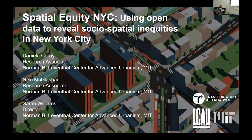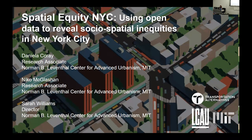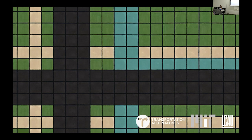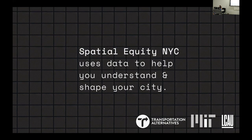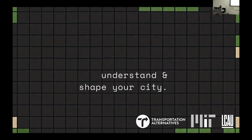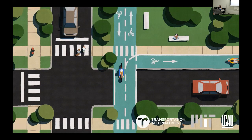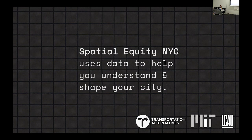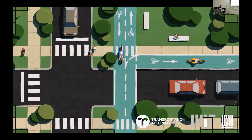I'll show how we do this in a project we recently worked on in New York City called Spatial Equity NYC. I want to recognize the research associates from the Levinthal Center who worked on this project. Spatial Equity NYC is a mapping tool created through a partnership between the LCAU at MIT and an organization called Transportation Alternatives, a non-profit transit advocacy association in New York City. The tool reveals inequities in the provision and quality of public space in New York City and is intended as a resource for city councilors, community board leaders, public space advocates, and the public.